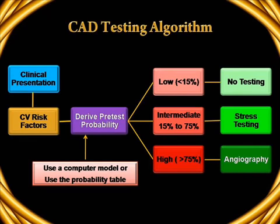This is the coronary artery disease testing algorithm. Look at the clinical presentation of a given patient — accepting the cardiovascular risk factors, combining the clinical presentation of chest pain and the risk factors, derive the pretest probability either by computer model or probability tables. Once the pretest probability is calculated, the patient will be classified as: less than 20% — low probability; 20 to 75% — intermediate probability; more than 75% — high probability. For those with less than 20%, no more testing is required. For those with 20 to 75%, stress testing is recommended. For those with more than 75%, angiography is the procedure of choice, not treadmill.